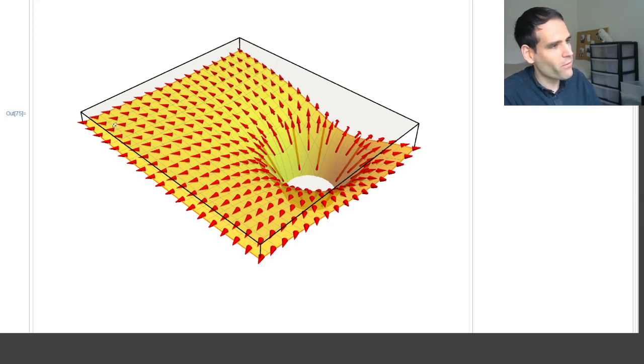When you are far away from the mass, the gravitational field points towards the mass but is very weak. As you get closer and closer, the gravitational field gets stronger and stronger, pushing you towards the mass.